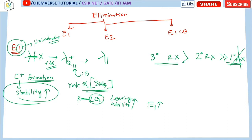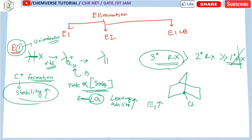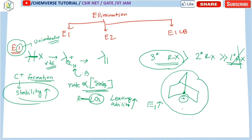One more important thing is that not all tertiary alkyl halides give E1 elimination. For example, there is a tertiary carbon — it is also a tertiary alkyl halide — but here elimination is not possible. In order to do elimination, we have to cleave this bond, and as a result we would get a carbocation at this bridgehead position, which is not stable.